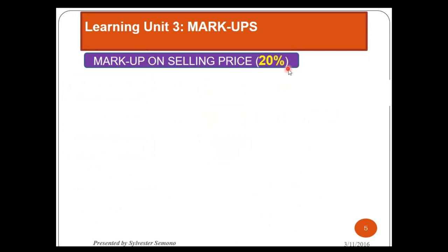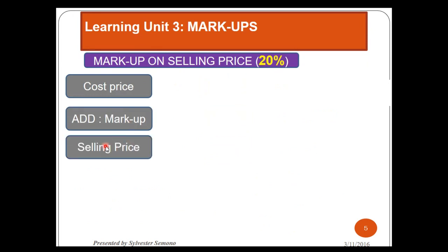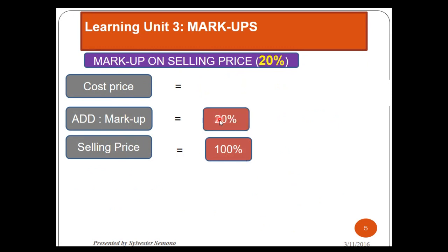Now, what if we change and say we're still using 20% but the markup is on selling price? We still have to analyze the same way, but it will change how we set up the percentages. Because the markup is on selling price, the selling price is now 100. The markup is 20. But you need to satisfy the formula: cost price plus markup equals selling price. So whatever I put for cost price, when I add the markup, I must get 100. It's better to say 100 minus 20, and you get 80. This has changed as compared to when the markup is on cost.